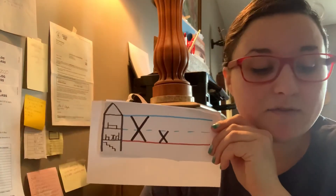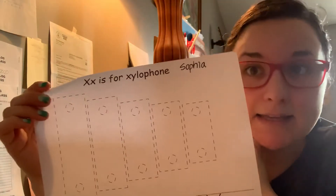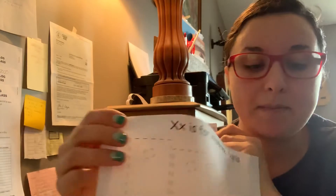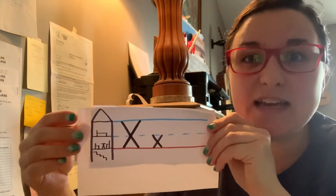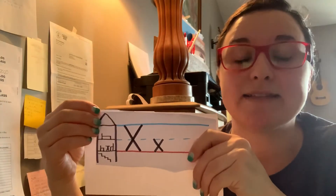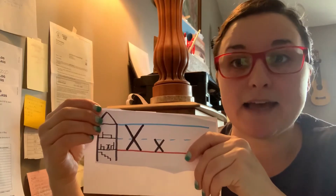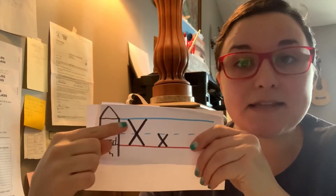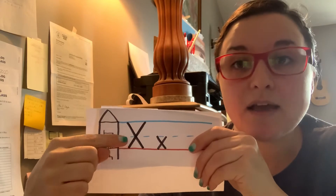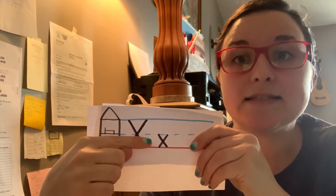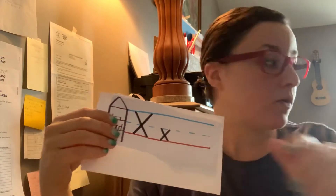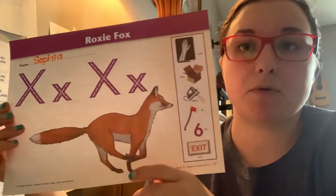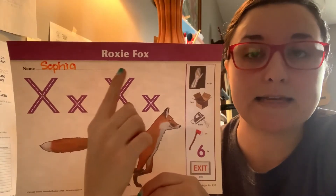All right, my friends, I'm back for our second X paper. Now, remember, we talked about X being a very silly sound — it sounds like a K and an S together. Our big X lives in the upstairs and the downstairs. Our little X lives in the downstairs. Now, yesterday or earlier today, whenever you watched the video, we looked at the big paper where we sang our song, Roxy Fox.